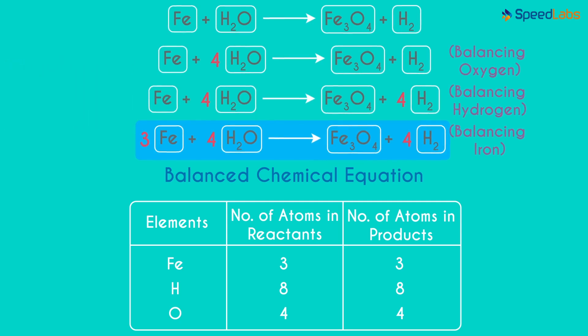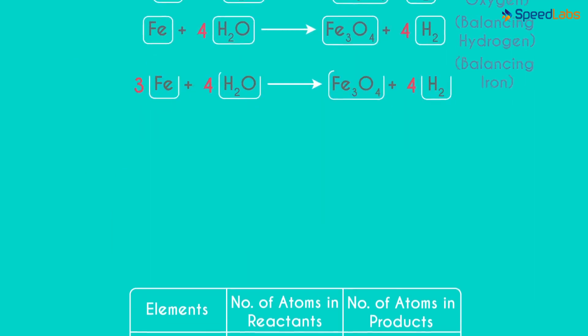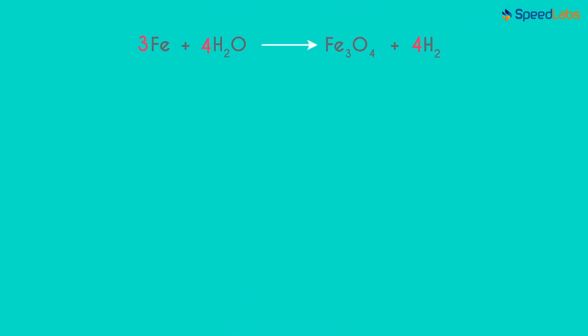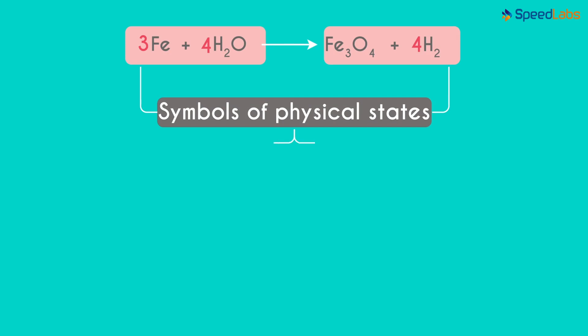Though we've balanced the chemical equation, there's one additional thing we can do. We can write symbols of the physical states of each reactant and product. What do I mean by this? There are 4 main states of the reactants and products.